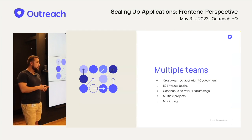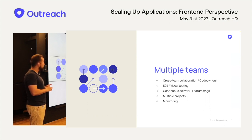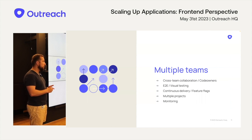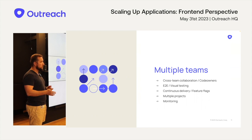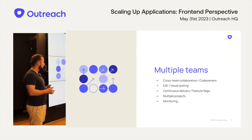You have your first users, you're getting bigger and bigger. You grow to a point where having one big engineering team doesn't work well and you need to split them — each team becomes responsible for a specific part of the application. In this case, it's really important to keep cross-team collaboration and stay aligned.